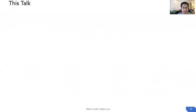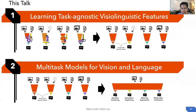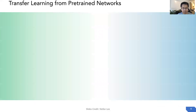This talk will contain two parts. First, I'll briefly introduce our work on learning task-agnostic visual-linguistic features. Then I will talk about multi-task models for vision and language. Okay, let's start.